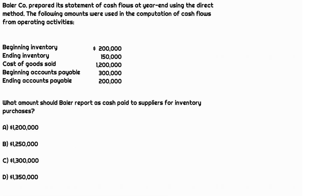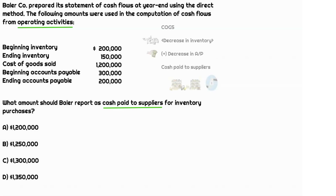We're talking about the statement of cash flows, specifically the operating section using the direct method. We're focused on how inventory purchases impact cash outflow, because the question is asking for the amount reported as cash paid. We're going to use the information provided and focus on cost of goods sold — how much cash is paid for inventory purchased. When you're purchasing your inventory, this is cost of goods sold.